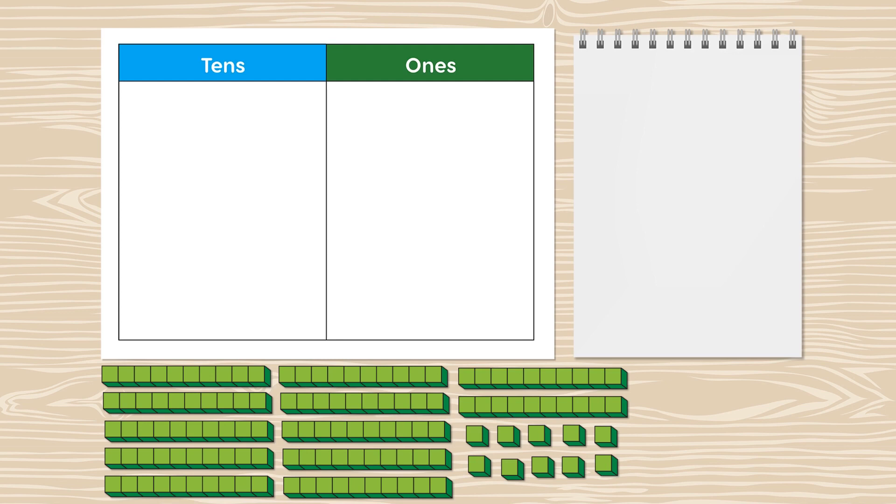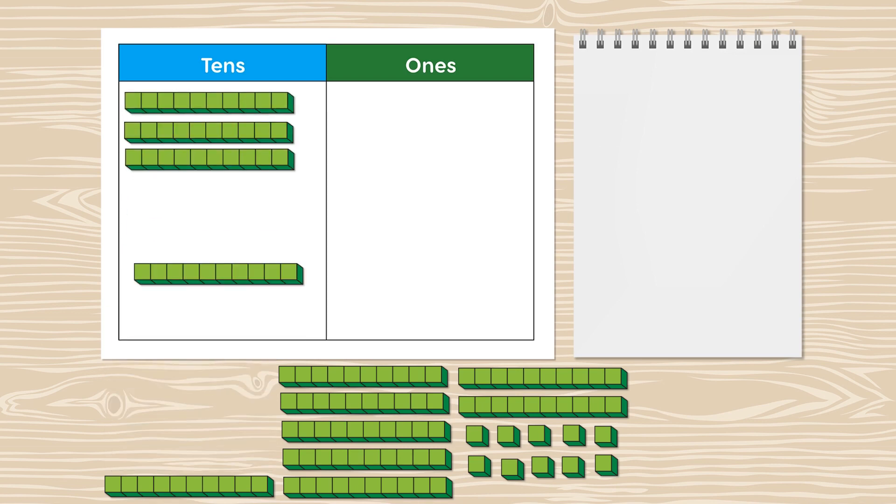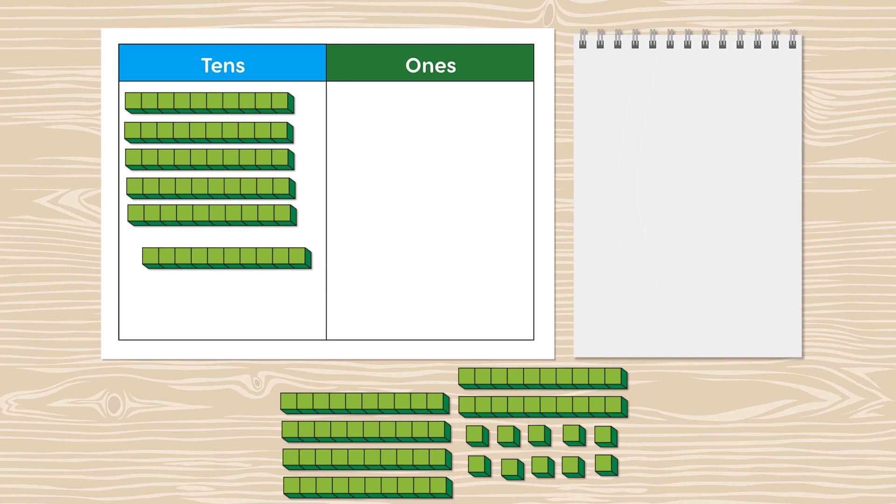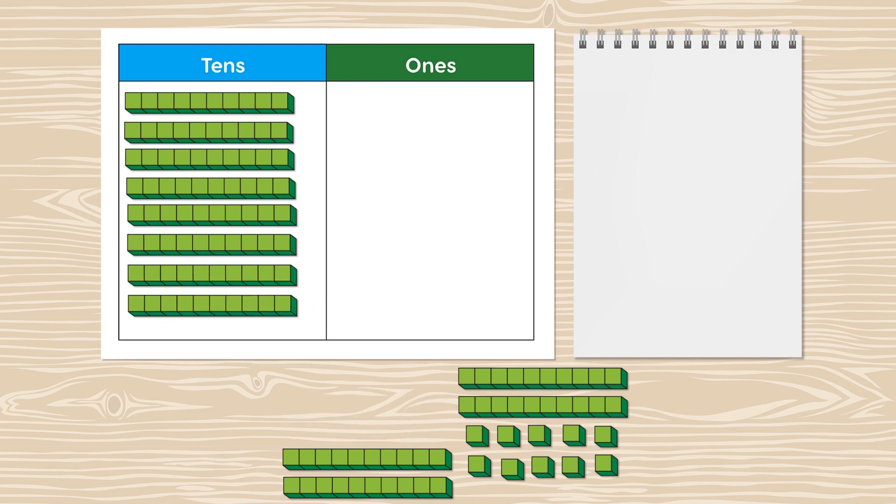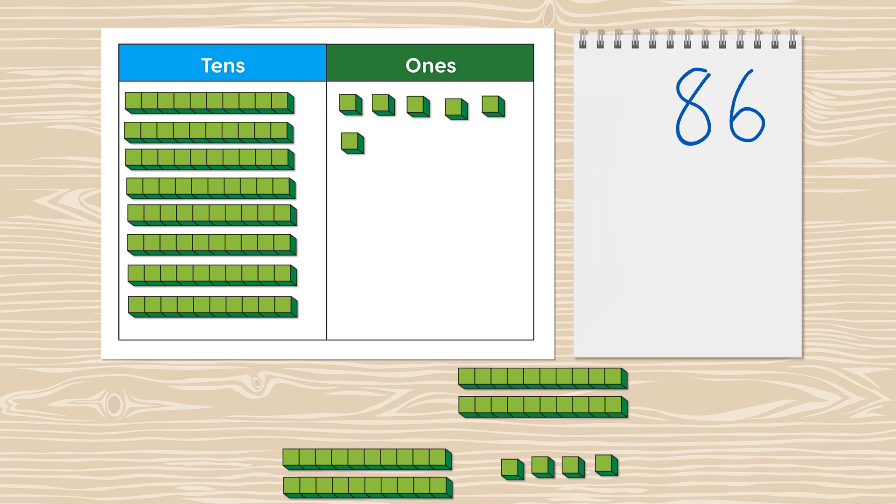Let's subtract 24 from 86 using base 10 blocks and a place value chart. We have one, two, three, four, five, six, seven, eight tens and one, two, three, four, five, six ones. Write 86 here. We want to subtract